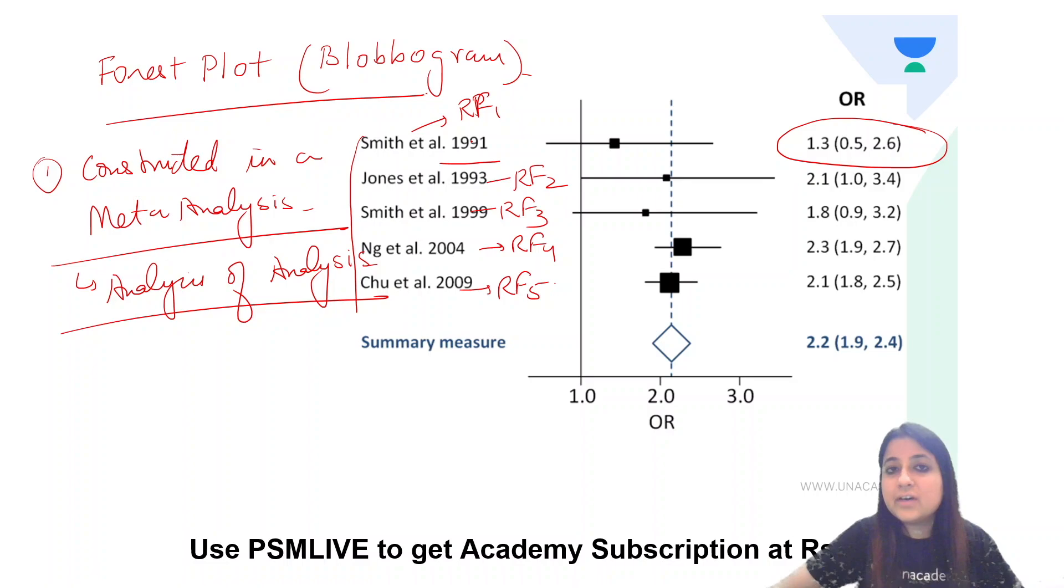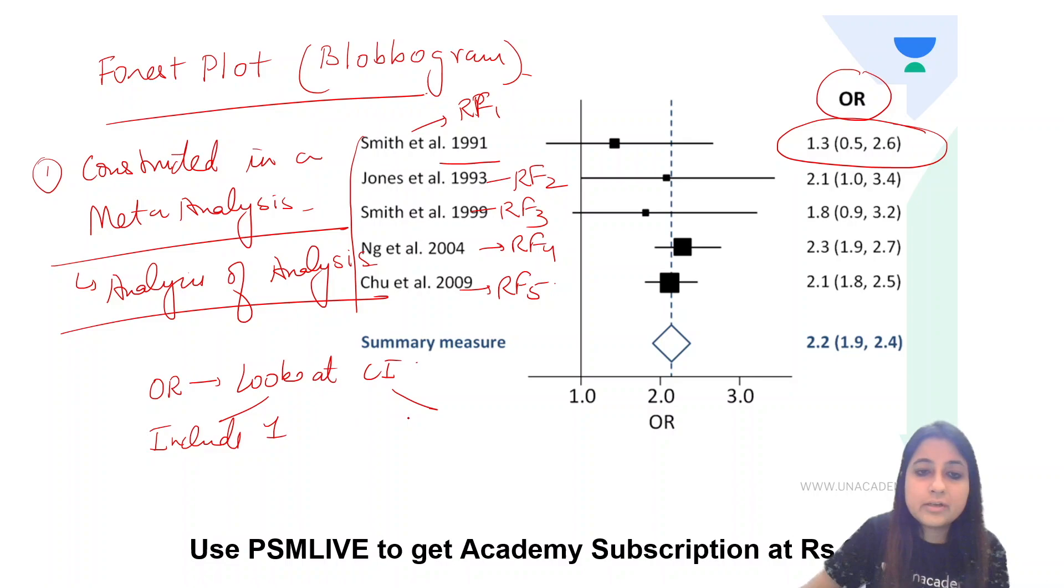Now look at the first and the second and the third study. When we look at the first study, all you have to look at the odds ratio. When you look at odds ratio, you have to look at confidence interval. Does it include one or does it not include one?